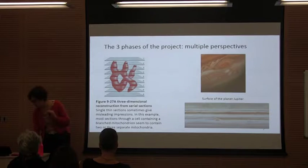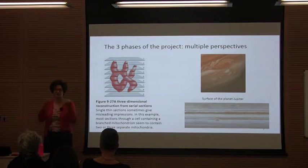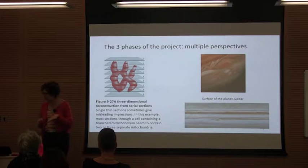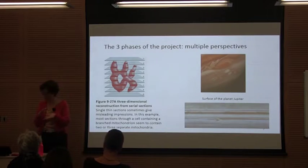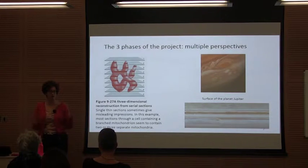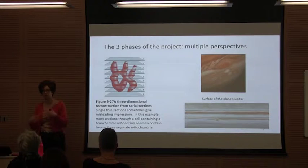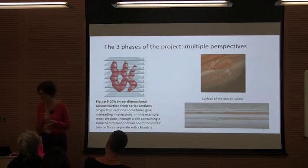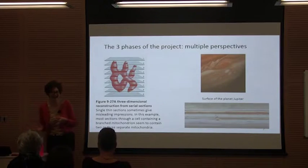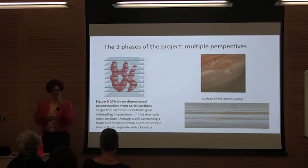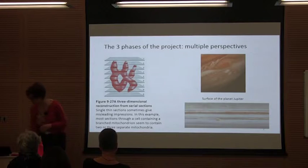What they've done is take multiple cross-sections and reconstruct a complex three-dimensional shape of a mitochondria — if you just looked at one section, you'd think there were a couple of little spheres. To get a three-dimensional picture, you need all these different perspectives. As a textbook of cell biology says, single thin sections sometimes give misleading impressions. That's what happened with the three phases — I got different perspectives on what was going on, especially working with different generations. The situation is more like the surface of Jupiter, where gases are moving around and it's constantly dynamic and changing.